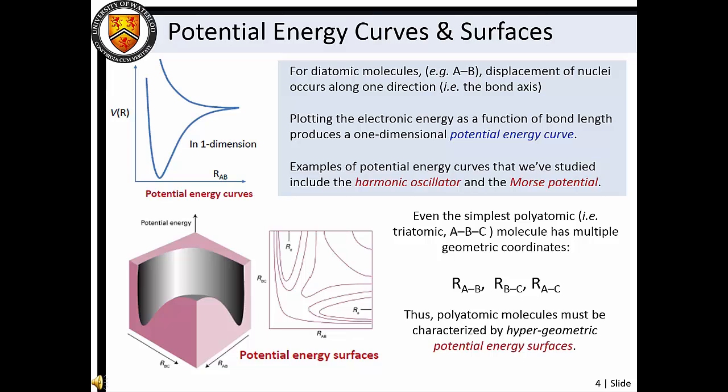When considering electronic transitions in molecules, we must remember that within the Born-Oppenheimer approximation, electronic energies depend parametrically on the nuclear configuration. This results in electronic potential energy curves for diatomic molecules and hypergeometric potential energy surfaces for polyatomic species. As we will see, the relative form of the potential energy curves or surfaces has important bearing on the probability of electronic transition between the two surfaces.